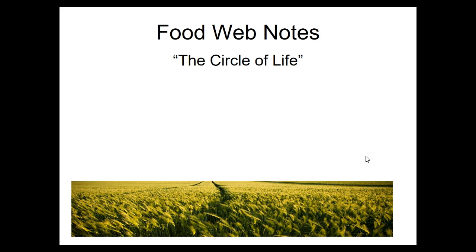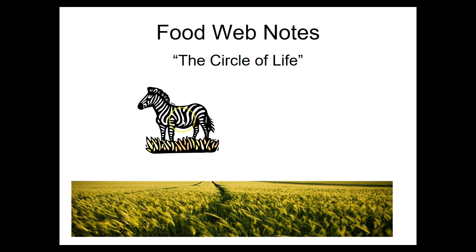In any food web we need to start at the bottom with something that is a producer — something that can take non-food materials, water, carbon dioxide, and produce and make food. In this picture the grass or the wheat would be our producer. The sun's energy is being converted into food energy. If the zebra comes along, the zebra is going to eat the grass. The way we represent that is with an arrow. The arrow goes from the grass towards the zebra, so the pointy end of the arrow goes into what is doing the eating — the grass goes into the zebra.